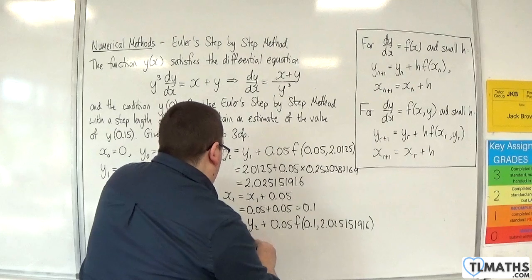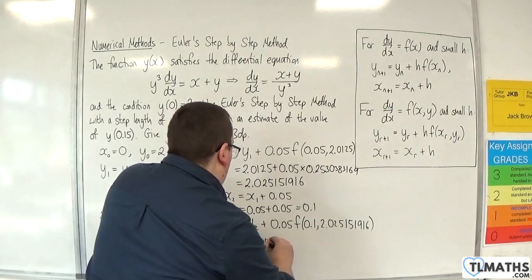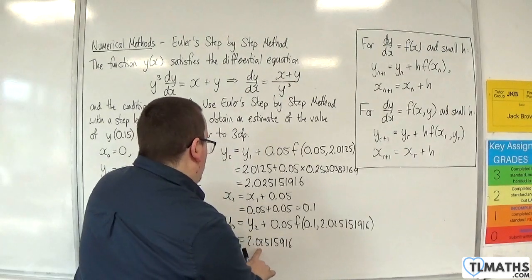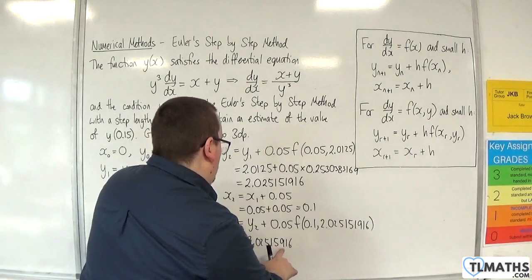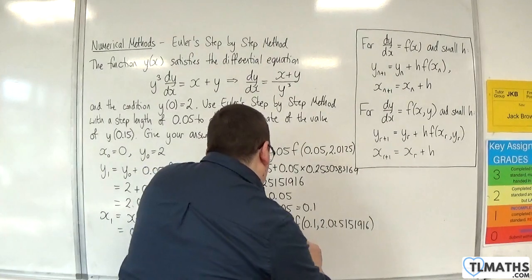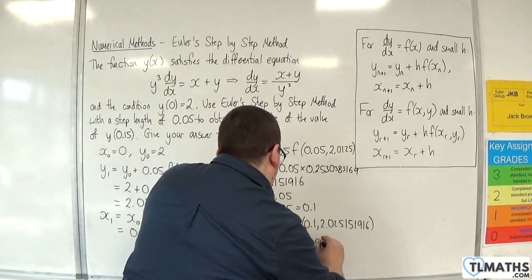So y₂, 2.025151916, plus 0.05 times, so I need to substitute that in there.